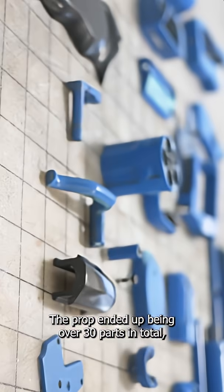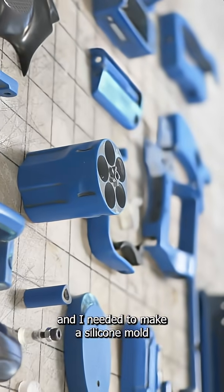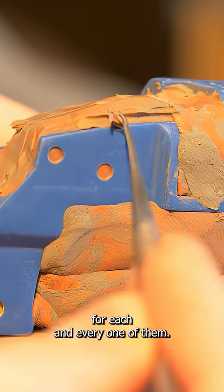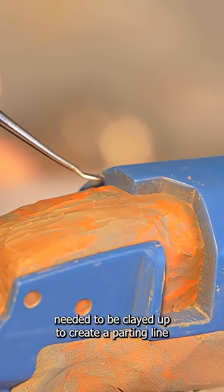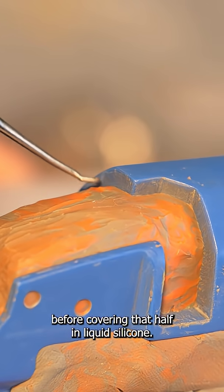The prop ended up being over 30 parts in total and I needed to make a silicone mold for each and every one of them. Each part needed to be clayed up to create a parting line before covering that half in liquid silicone.